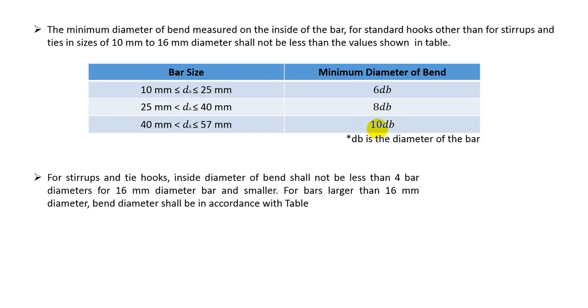Here, for straps and tie hooks, inside diameter of band shall not be less than 4 bar diameters for 16mm bar and smaller. For bars larger than 16mm diameter, the band should be in accordance with the table. I mean, if our bar are according to the table, then we will use the minimum bar diameter from the table.